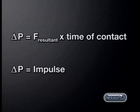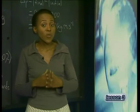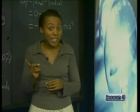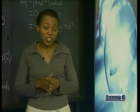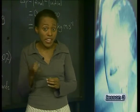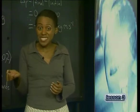This quantity is called the impulse on the body. Impulse is the quantitative term for change in momentum. Impulse is a vector quantity, so we must always specify its magnitude and its direction. Since force is measured in newtons and time in seconds, the SI unit for impulse is newton seconds.